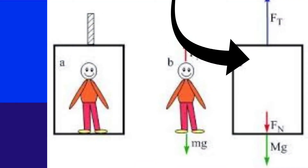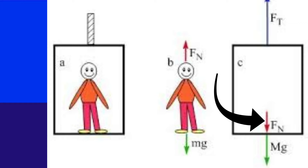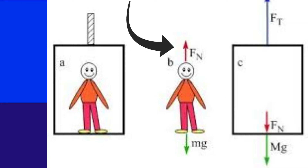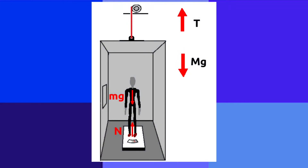The forces on the lift are the reaction from the person on the floor, which by Newton's third law is equal and opposite to the normal reaction force from the floor on the person, the weight of the lift, and the tension in the lift cable. When you consider the lift and the person as a single object, the normal reaction forces cancel out. When the lift is accelerating, the normal reaction from the person on the lift is not the same as the weight of the person. We are going to see all these things on the board now.